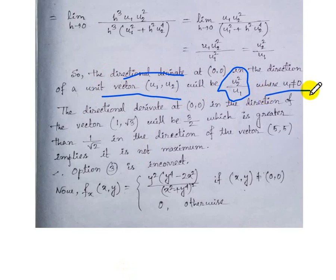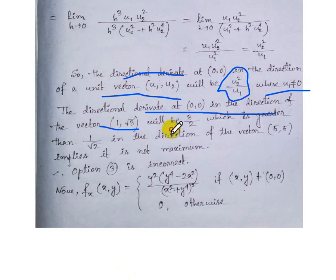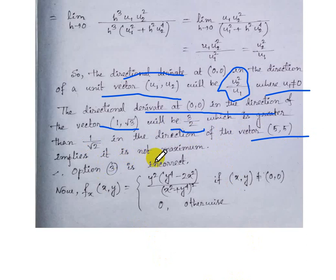So the directional derivative at (0,0) in the direction of unit vector (u₁, u₂) is u₂²/u₁ where u₁ ≠ 0. Checking option 3: the directional derivative in direction (1, √3) gives 3/2, which is greater than 1/√2 for direction (5,5), so the maximum does not occur at (5,5). Option 3 is incorrect.